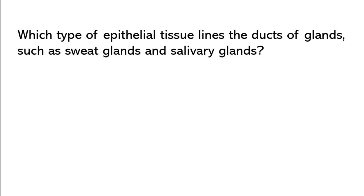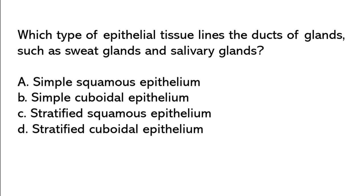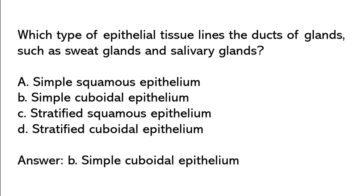Which type of epithelial tissue lines the ducts of glands, such as sweat glands and salivary glands? Simple squamous epithelium, simple cuboidal epithelium, stratified squamous epithelium, stratified cuboidal epithelium. So the correct answer is option B: Simple cuboidal epithelium.